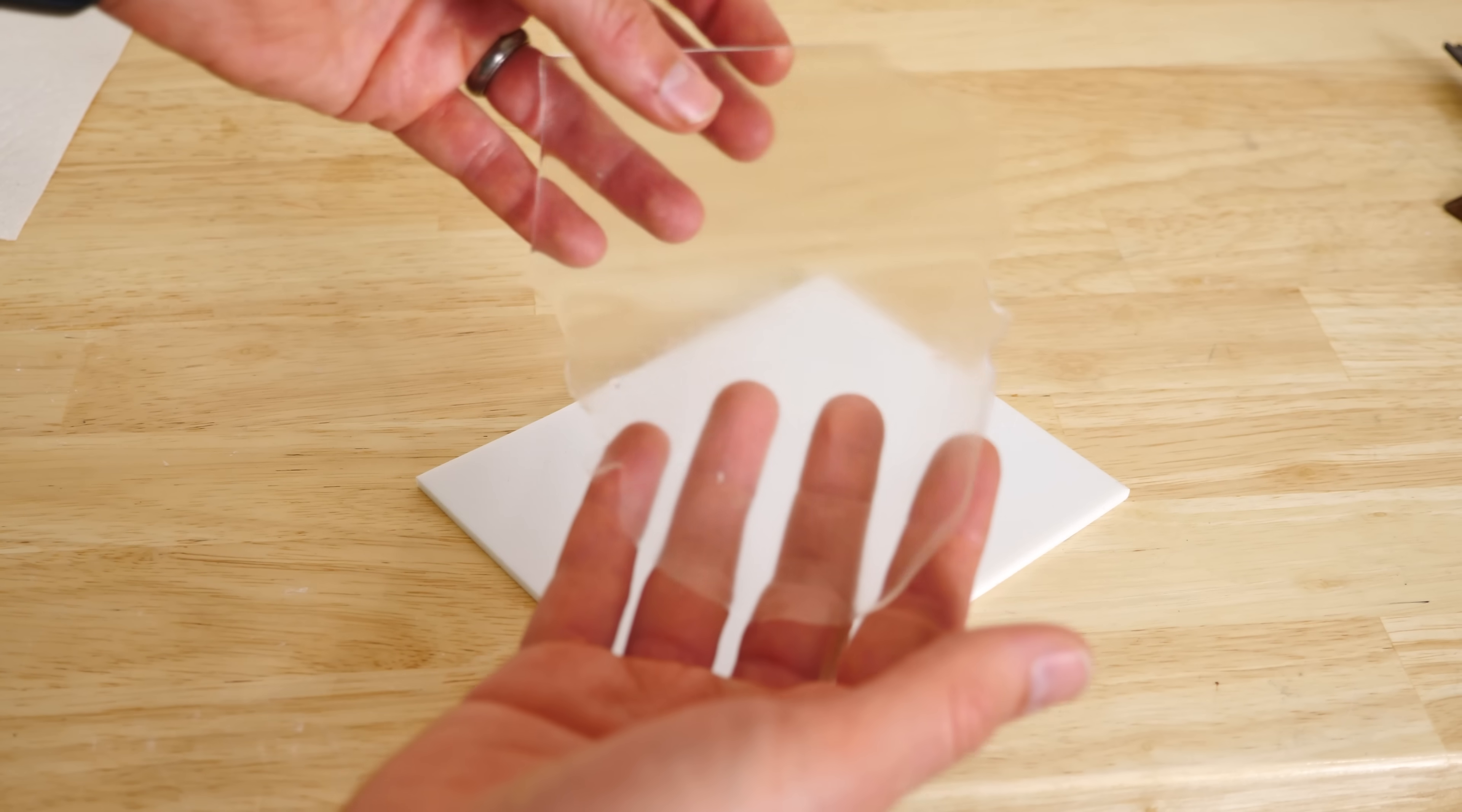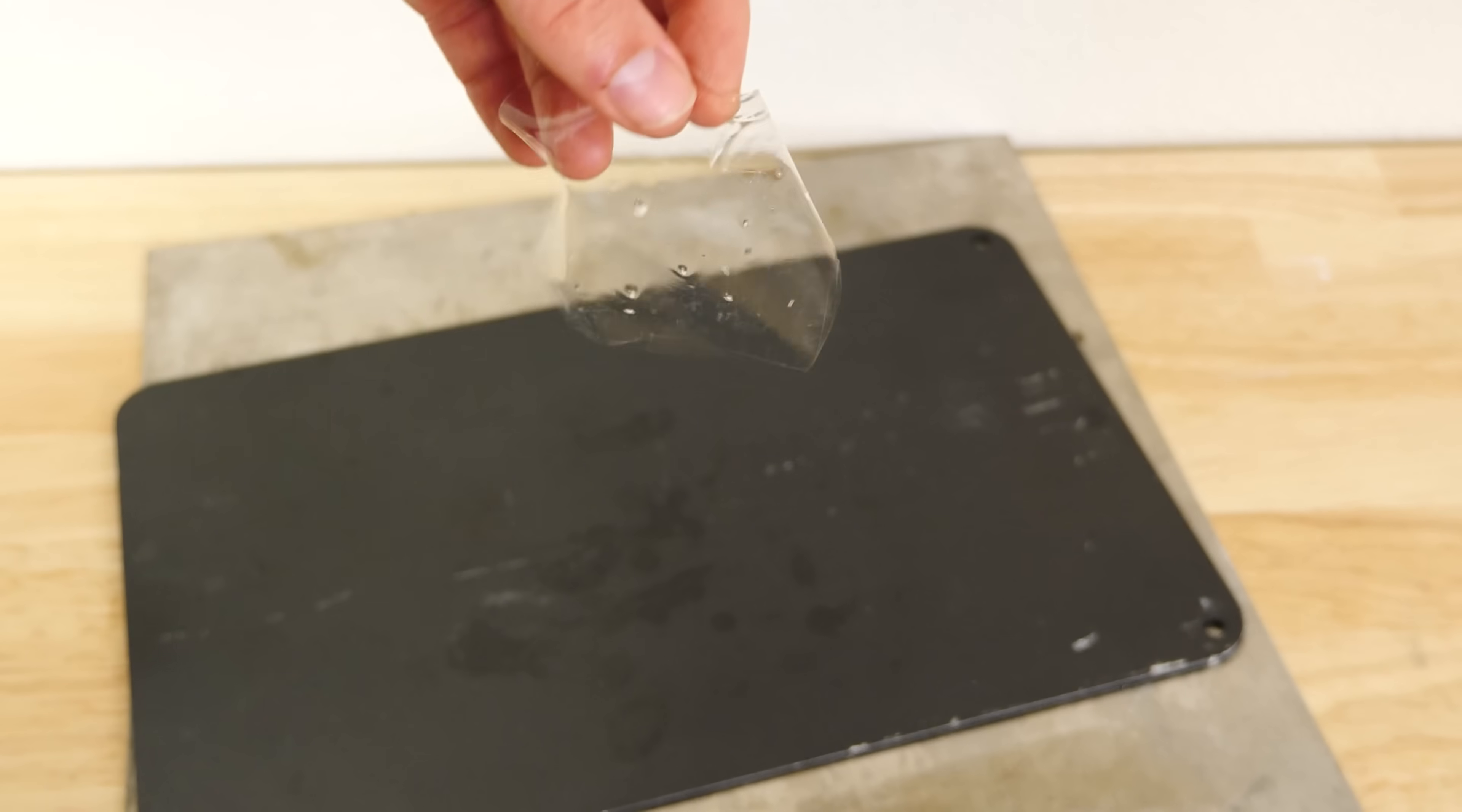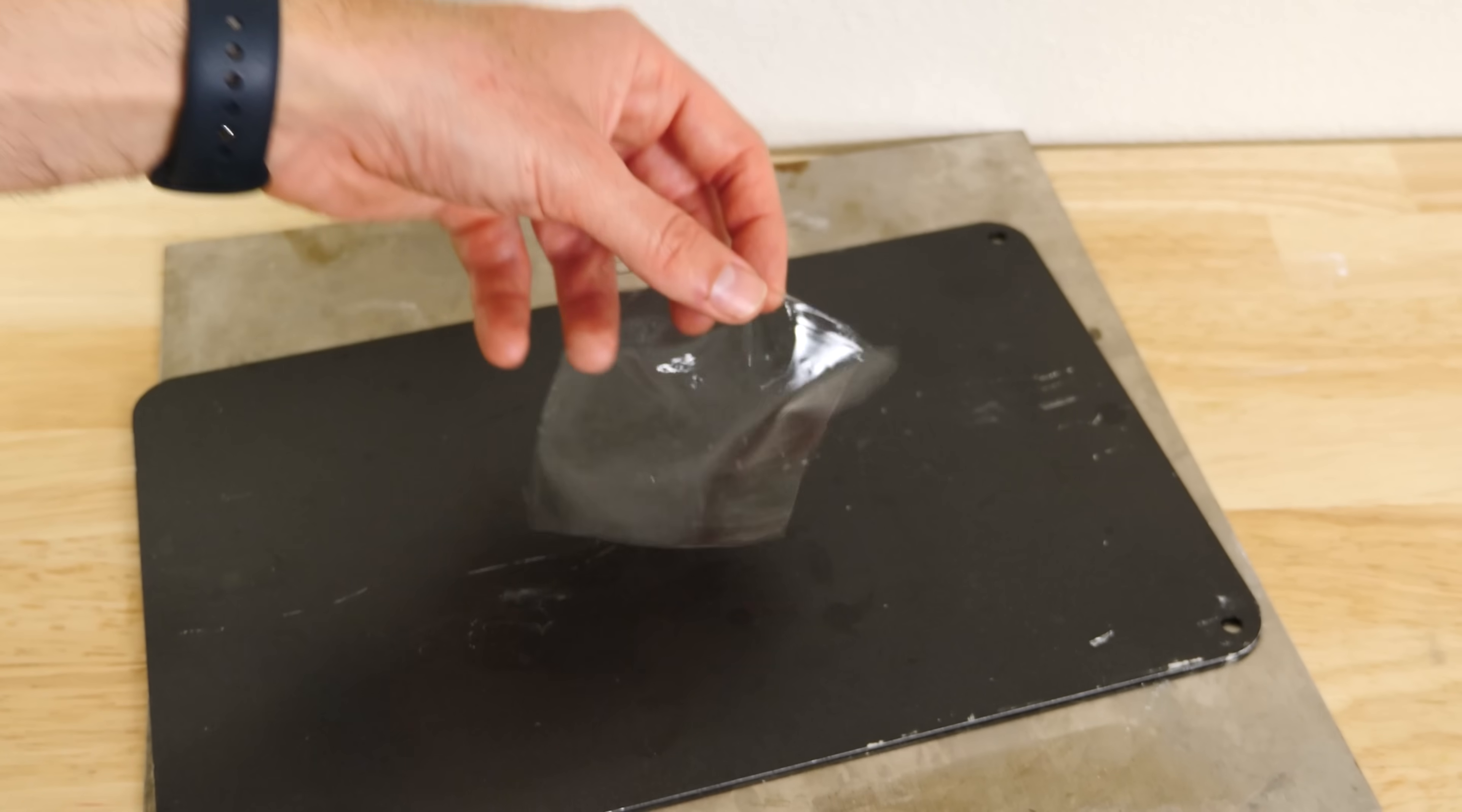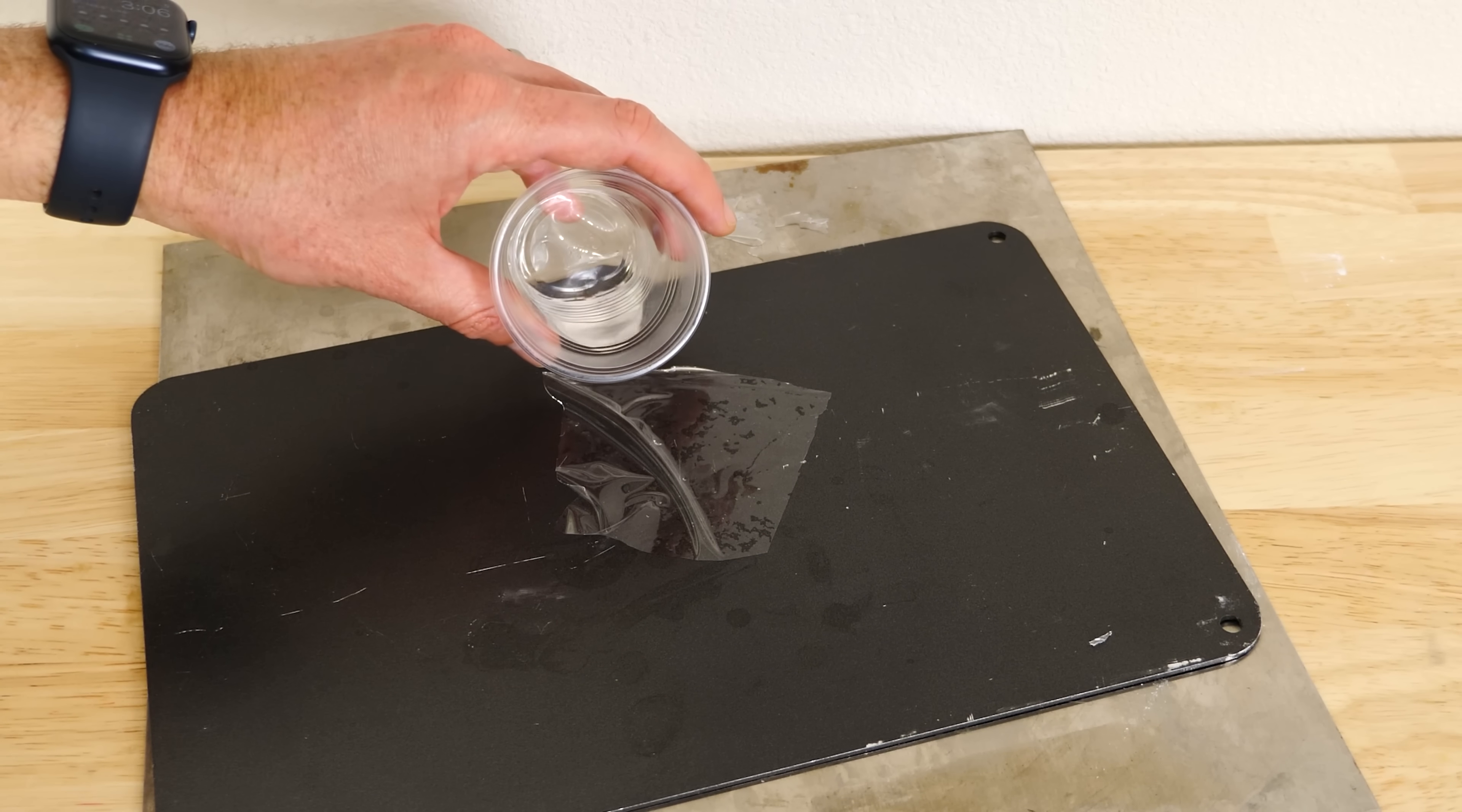There we go. And then you can see this PDMS that comes from the outside of the cup, so it's much thinner. Now watch what happens when I pour hexane on it.